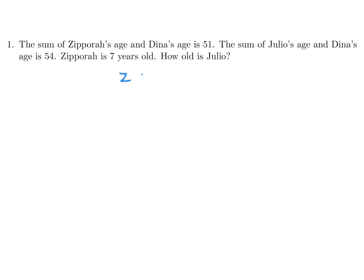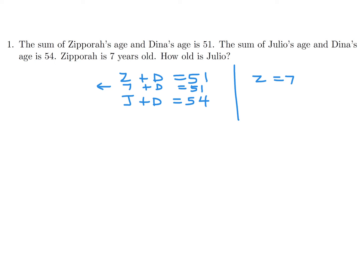So Z plus D is 51, J plus D is 54, and Z is 7. If we put 7 in and solve, then D would be equal to 44. And then putting 44 into J plus D gives us J is 10.